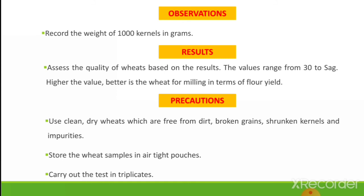Precautions to be taken while conducting the experiment: use clean, dry wheat samples free from dirt, broken grains, shrunken kernels, and impurities. Store the wheat sample in airtight pouches. Carry out the test in triplicates. Thank you.